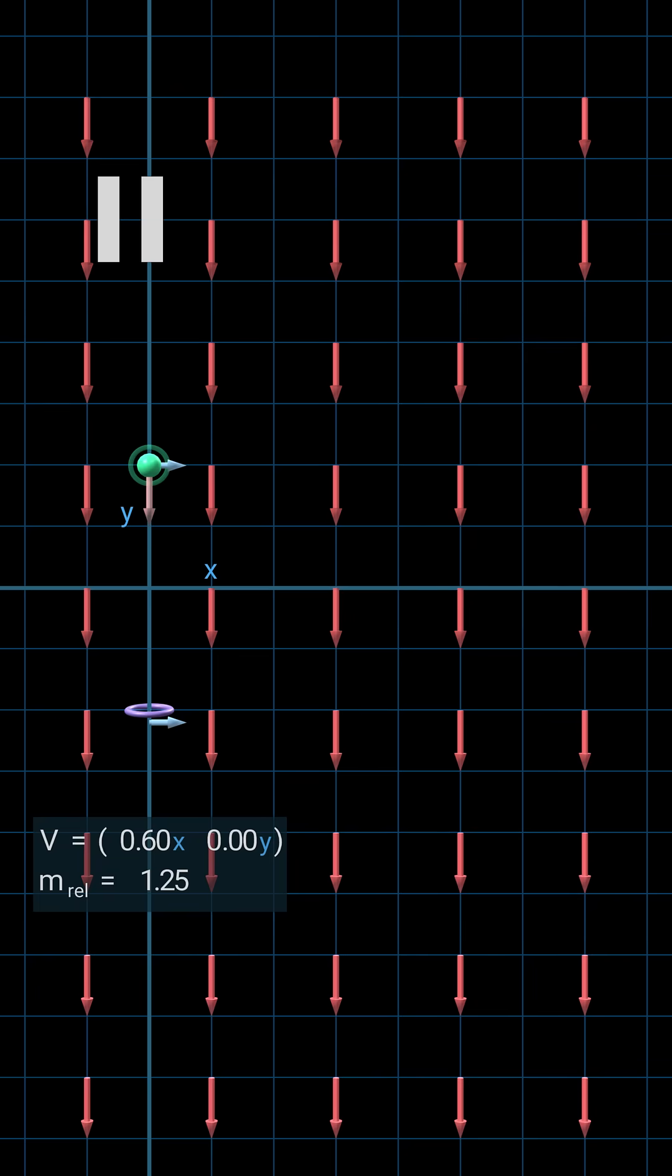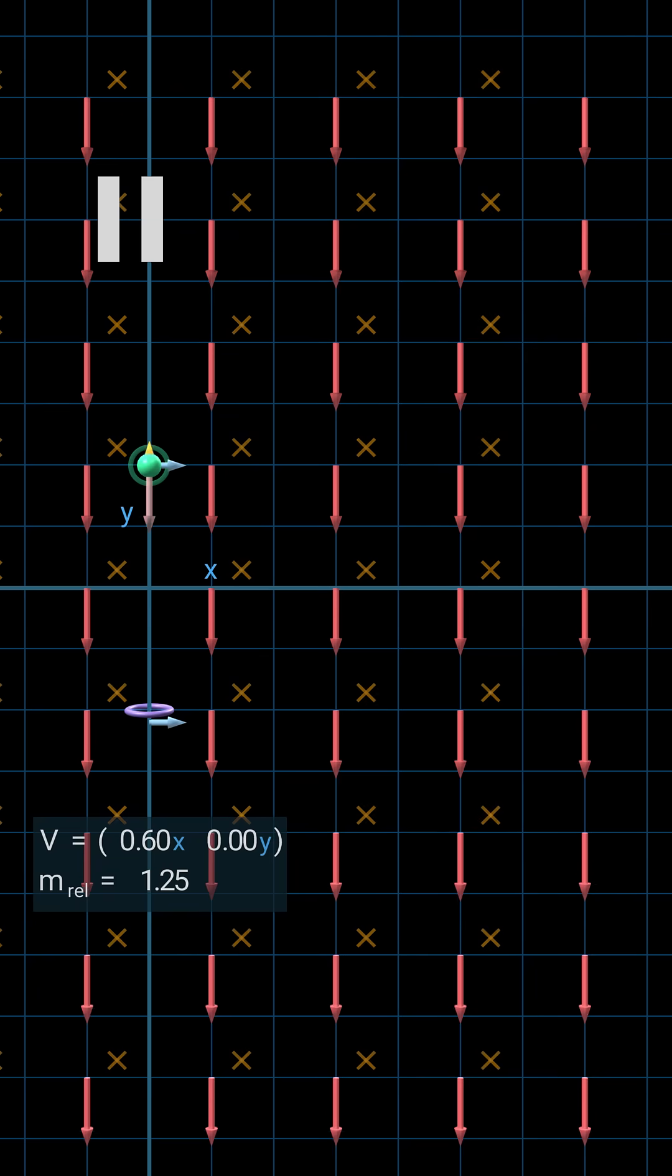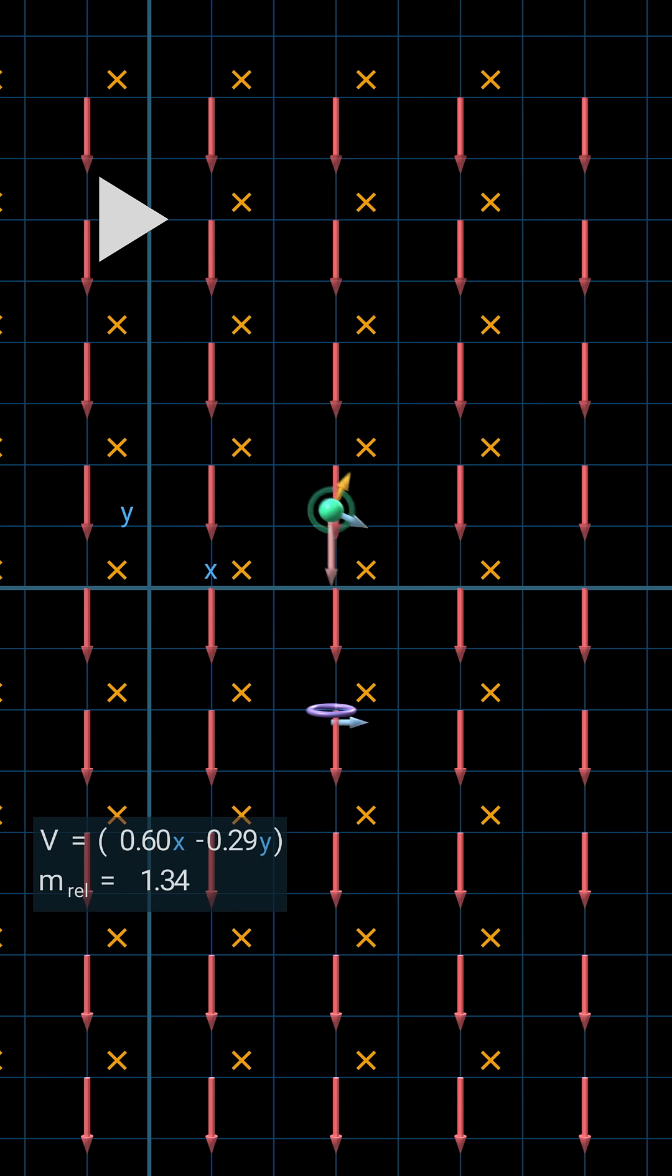Here's what we forgot. When switching between observers, electromagnetic fields transform, and a magnetic field shows up. The magnetic force adds a small pull to the right, just enough to keep the x-velocity steady.